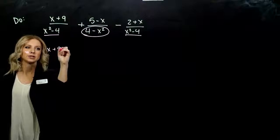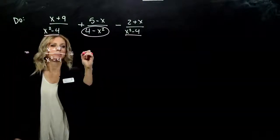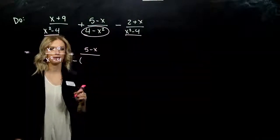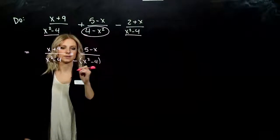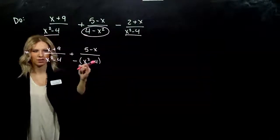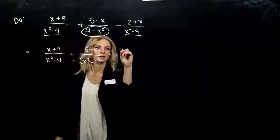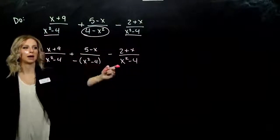The first one isn't going to change. But for the second one, I have 5 minus x up top. When I take out a negative, now I'm looking at reversing the signs. X squared minus 4. We match exactly. We still have that little negative to take care of, but that's fine. And our last term has that same term in common.